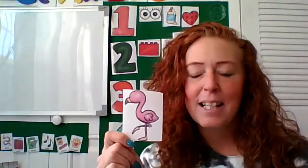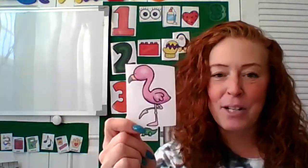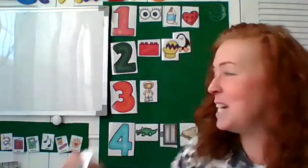Do you guys know what this kind of bird is called? This is a flamingo. Look at that silly bird. He's pink. He's standing on one leg. Flamingos are so cute. Ready? Fla-ming-go. Yeah, three.